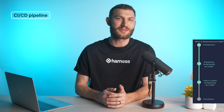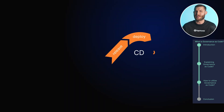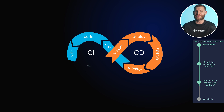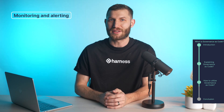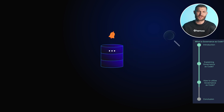Integrating governance code into your CI/CD pipeline is another challenge, requiring tight coordination between development, operations, and security teams to ensure governance policies are applied consistently without disrupting your workflow. Lastly, you'll need robust monitoring and alerting systems in place to catch policy violations, generate alerts, and give you insight into your overall governance posture.